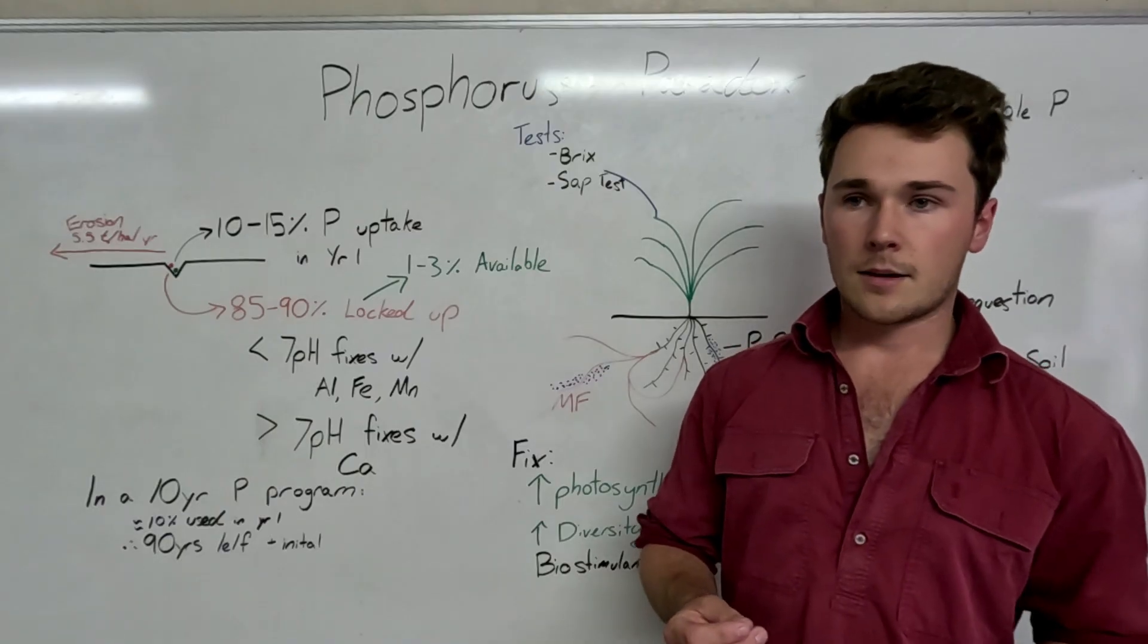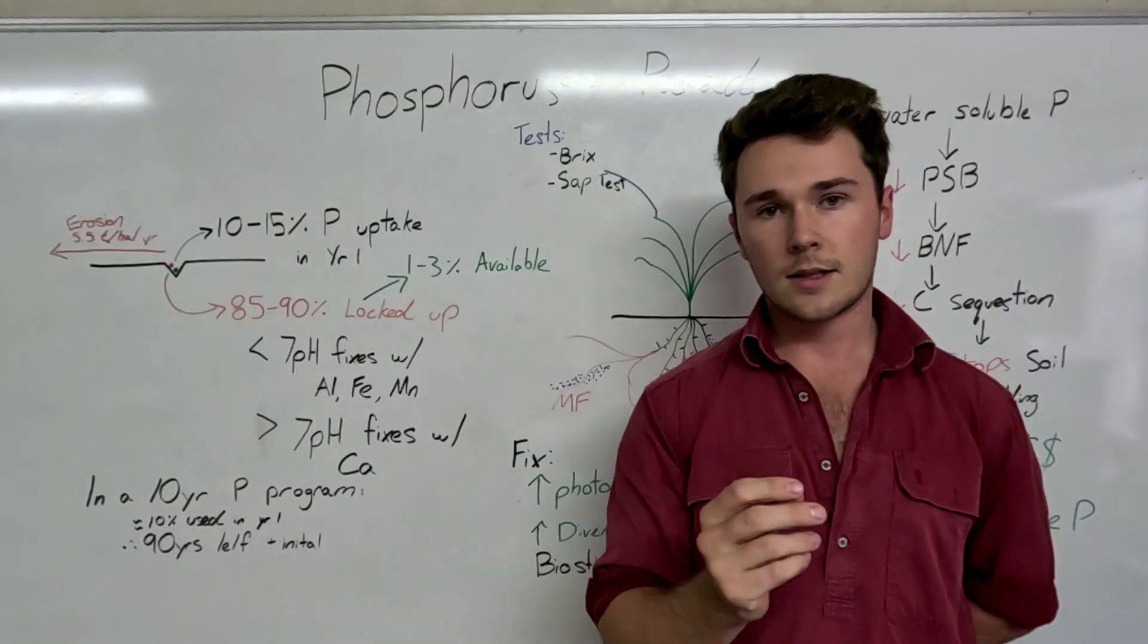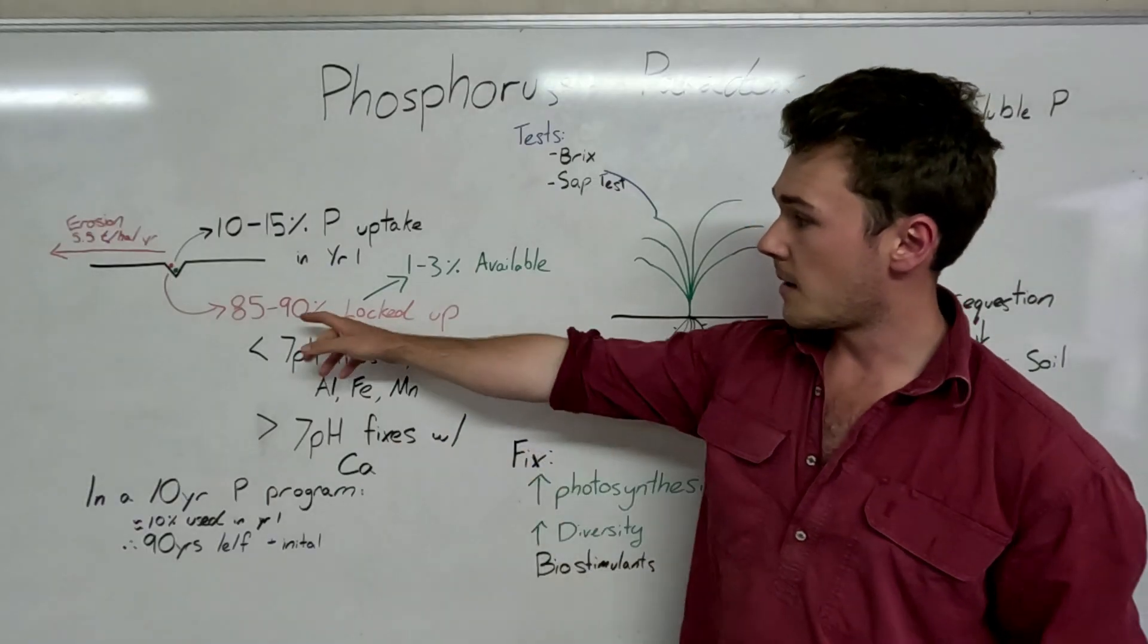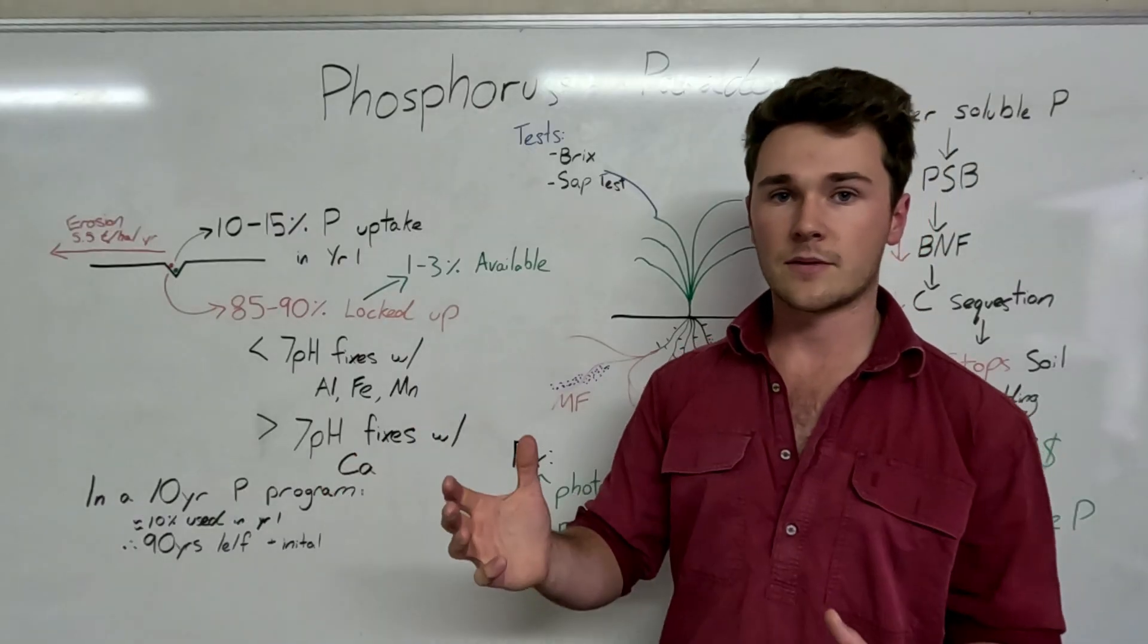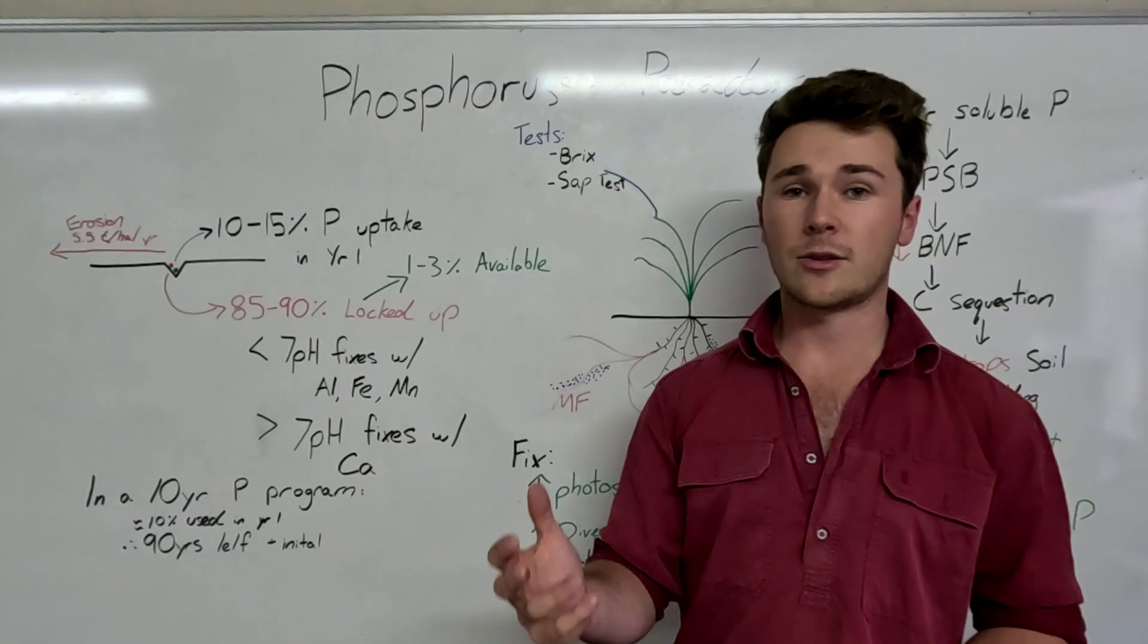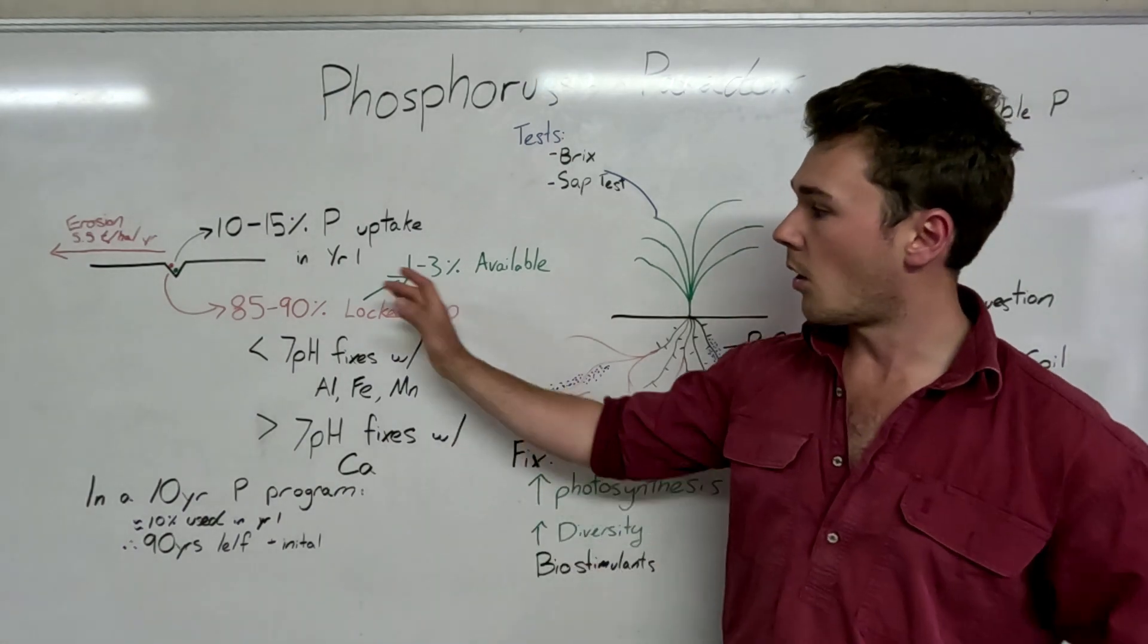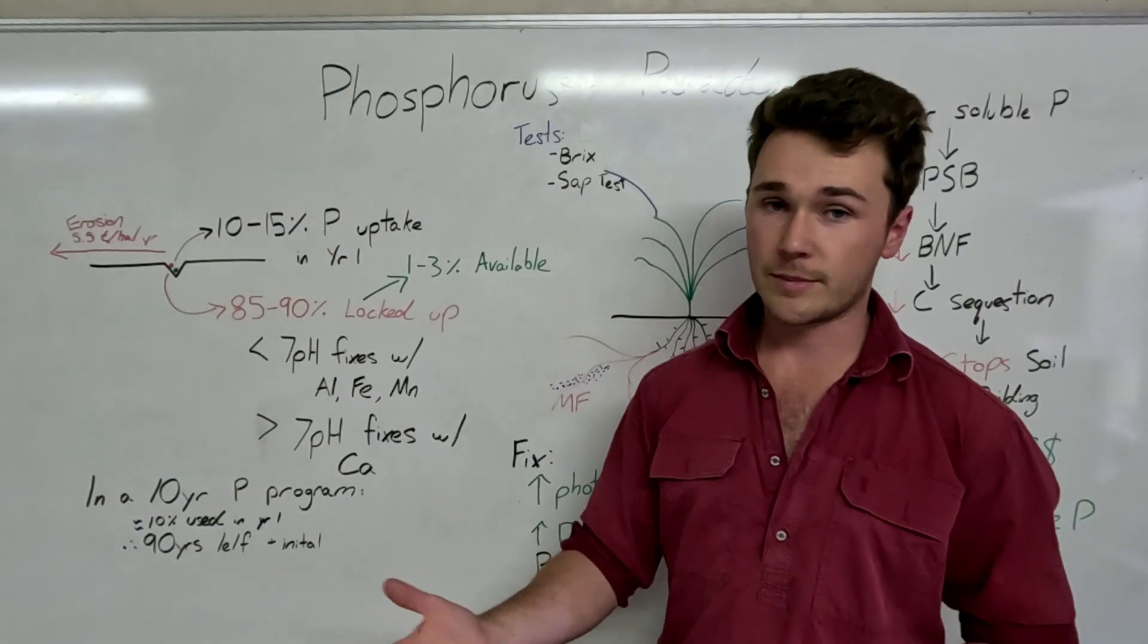So the key problem I guess is that currently when we apply phosphorus only about 10 to 15 percent of that is actually taken up by the plant. The rest is actually locked away, so that's about 85 to 90 percent is locked up. And yes over time that soil becomes available but it takes quite a long time. So typically depending on your soils and the rate at which your soil locks up phosphorus, around 1 to 3 percent of that locked up phosphorus becomes available.